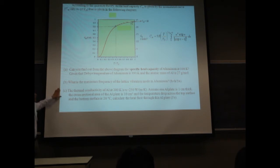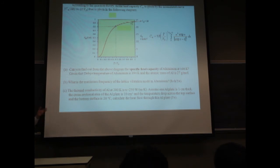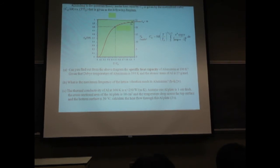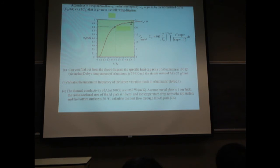For example, you have a heat capacity as a function of temperature, and you need to understand the physical meaning of the diagram. The question will be: find from this diagram the specific heat capacity of aluminum at 100K, given the Debye temperature. First you need to understand what heat capacity is, what the temperature dependence is, and what the Debye temperature is. Then you can find C, the heat capacity. The second part: what is the maximum frequency of the lattice vibration mode of aluminum?